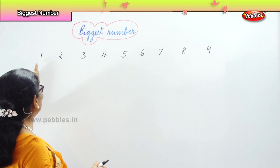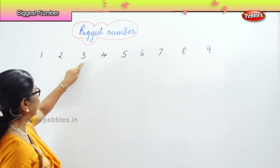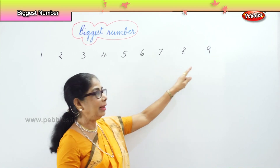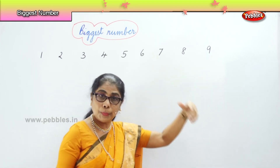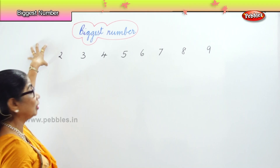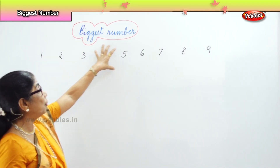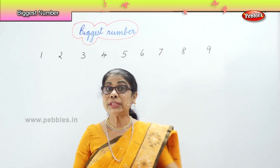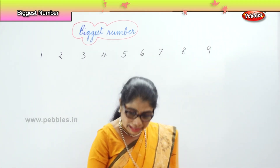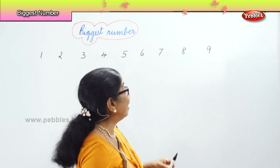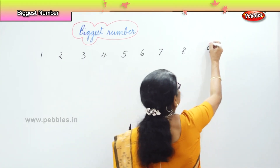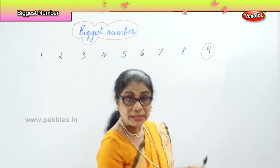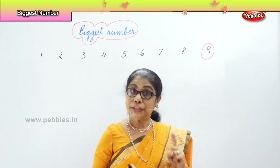Among these — one, two, three, four, five, six, seven, eight, nine numbers — supposing I say there is one chocolate, two chocolates, three, four, five, six, seven, eight, nine. Which is the biggest? Definitely it is nine. Nine is the biggest single digit number.